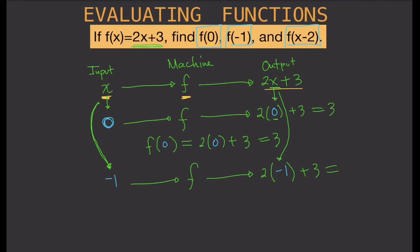So the calculation gives us 2 times negative one is negative 2, plus 3 is positive 1. Written formally: f of negative one equals 2 times negative one plus 3, which equals positive 1. The output is positive 1.